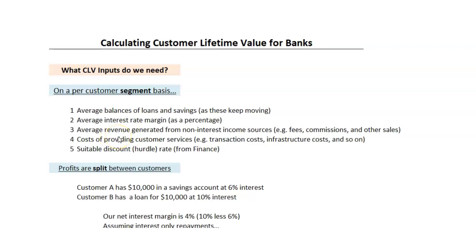We also need the average revenue from non-interest income sources. Up here we're talking about loans and savings, but we can also make money from fees, commissions, and selling things, so we need to consider that because they contribute to our income. We need to look at the cost of providing or supporting the customer — we might have retention costs in there, and if there's a transactor they could be incurring fees on our behalf, for example using a machine to take out money. So all the things that we need to do to supply that customer.